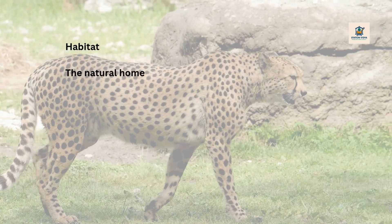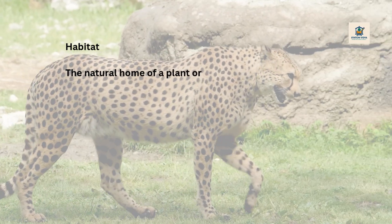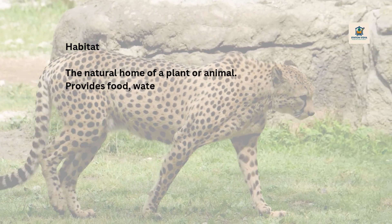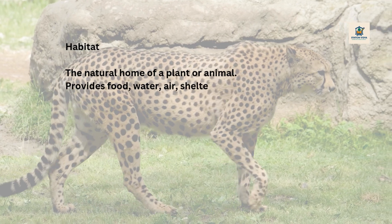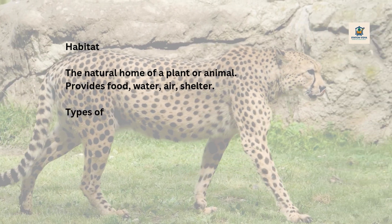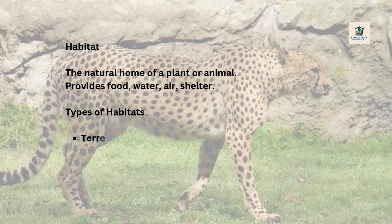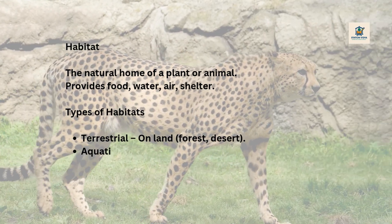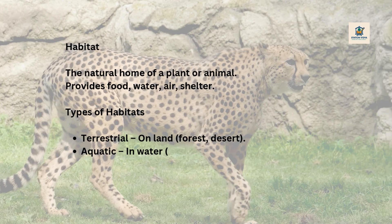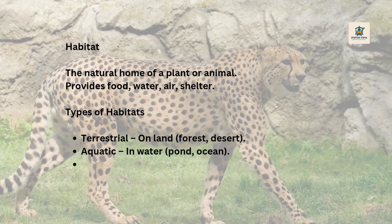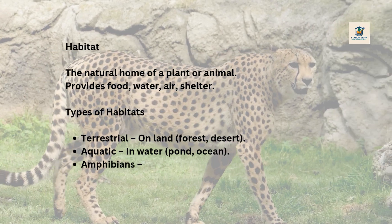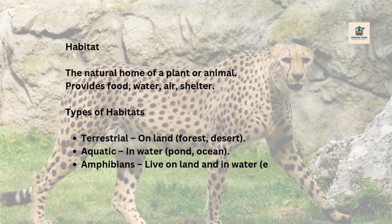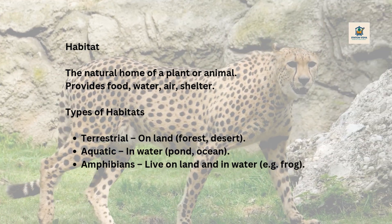Habitat is the natural home of a plant or animal. It provides food, water, air, and shelter. Types of habitats: terrestrial (on land) — forest, desert; aquatic (in water) — pond, ocean. Amphibians live on both land and water, e.g. frog.